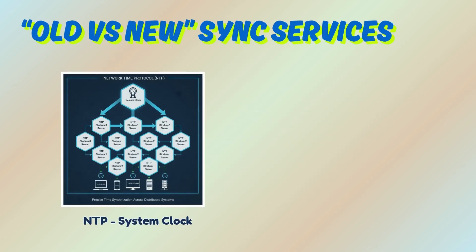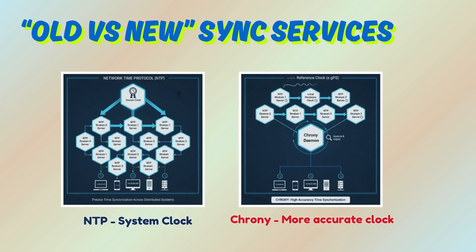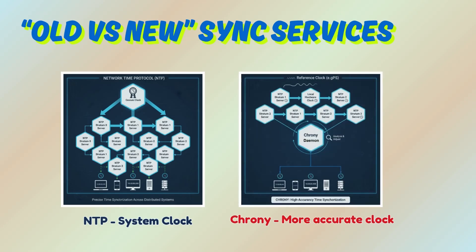Physical time still matters for TTLs, expiries, and reporting. NTP and Chrony services are available for syncing system clocks across machines. Network Time Protocol is the standard protocol used, while Chrony is a modern, improved time sync service that replaces or complements NTP.